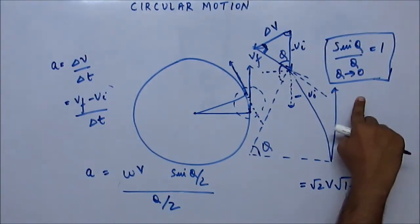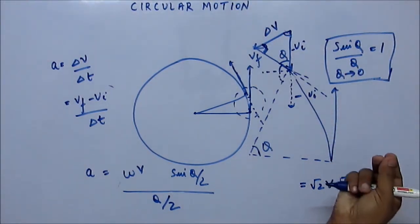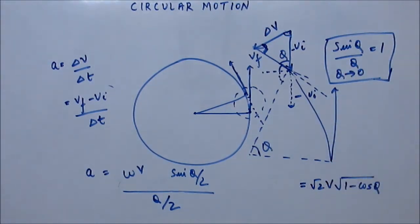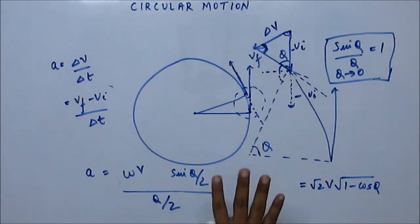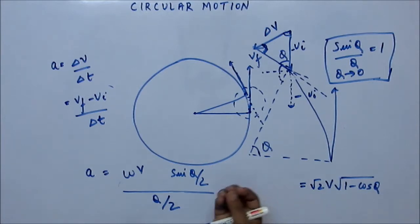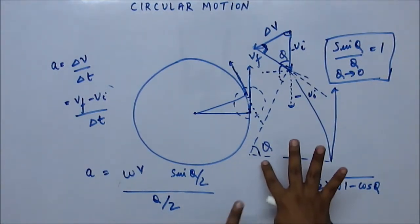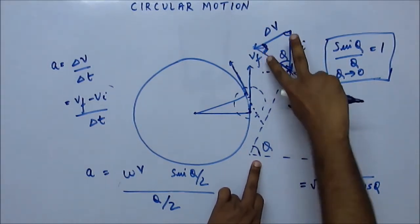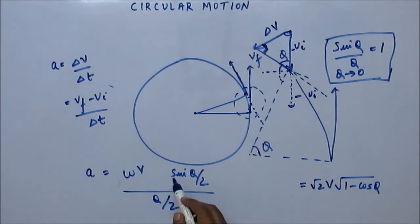I'm not going to give you the proof because that's the job of your maths teacher, but sine θ by θ when θ is very small is 1 — you must know this. Similarly, the θ here is θ/2; you can call it φ, so it's sin φ upon φ. We are taking the situation when θ is very small — only then does the Δv vector come perpendicular to the radius vector.